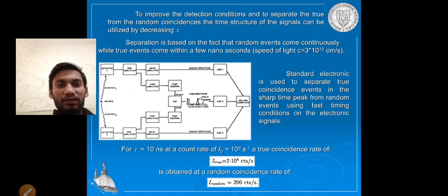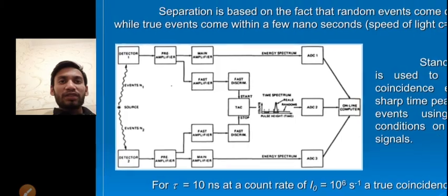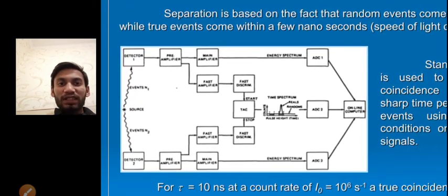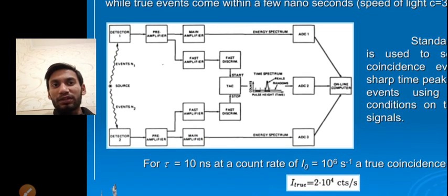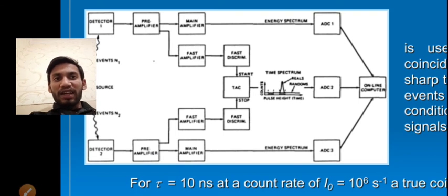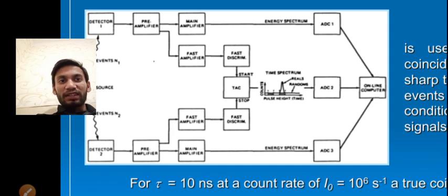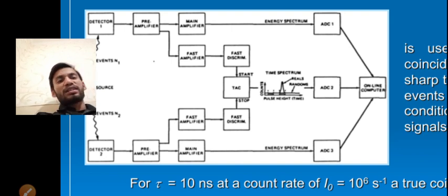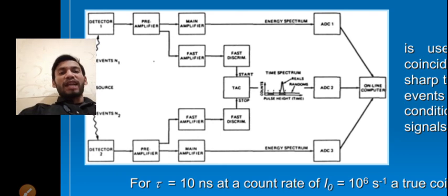To improve detector conditions and separate true signals from random coincidences, the time structure of the signal can be utilized by decreasing omega. There are two detectors with a source producing two photons. Signals pass through two amplifier types: a main amplifier and a fast amplifier. The fast amplifier sends signals to the fast discriminator, and the main amplifier sends the energy spectrum directly to a computer. Both contribute to the time spectrum, which is on the order of 10^-6 seconds.